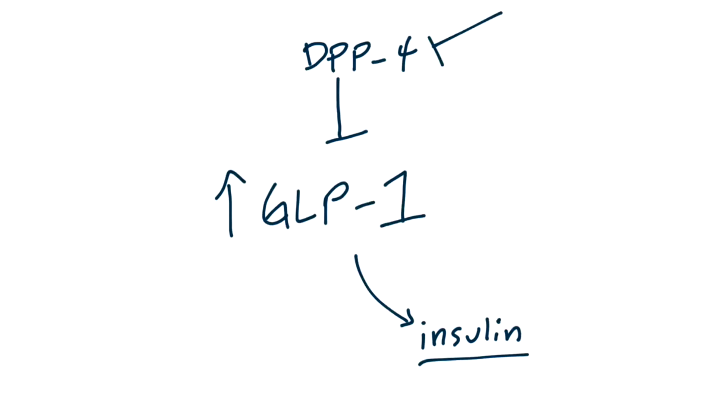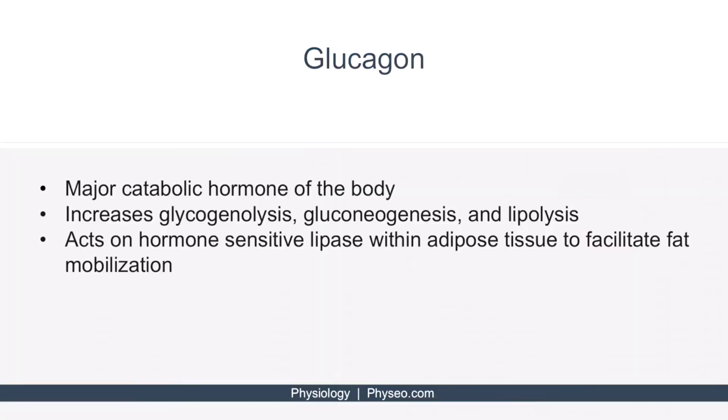Can you think of drugs that block DPP-4? Sitagliptin, or other drugs that have the suffix gliptin, are all DPP-4 inhibitors. What about a drug that is an analog to GLP-1? Liraglutide or exenatide. These are both GLP-1 analogs and have the suffix tide.